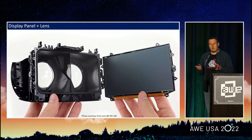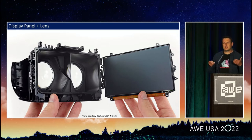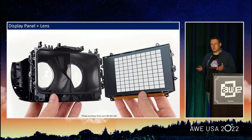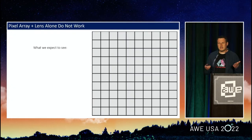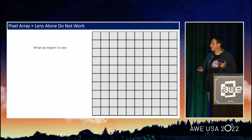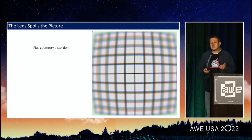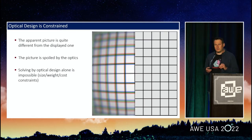Was it the display panel or the optics? The answer is neither. If you think of a VR display as a combination of a display panel and a lens, and you would show a simple grid on the display panel, you would expect to see it as displayed. But in fact, the picture projected through the lens will be affected by chromatic aberrations, geometry distortions, vignetting, etc. The picture you would see in that simple device will be quite different from what was displayed.